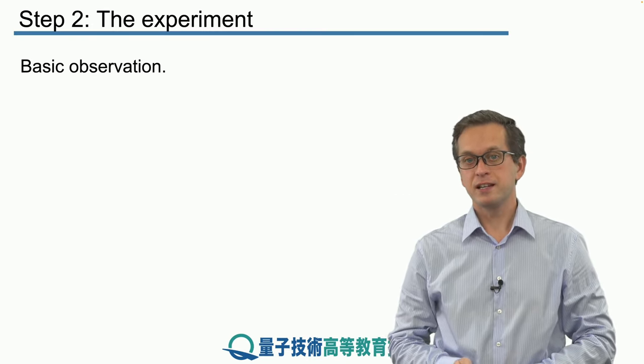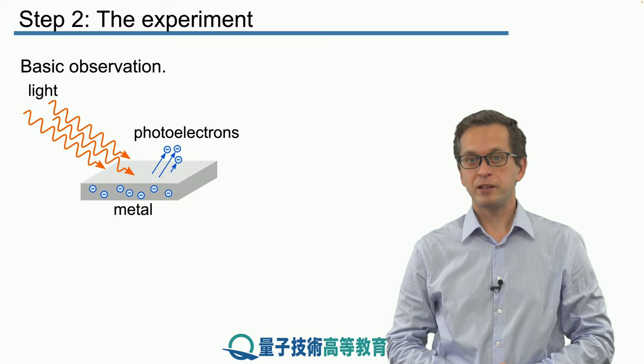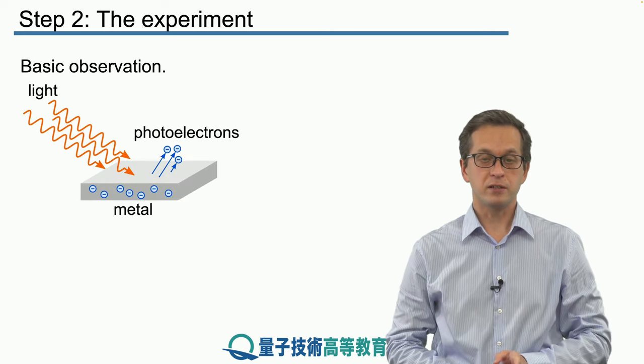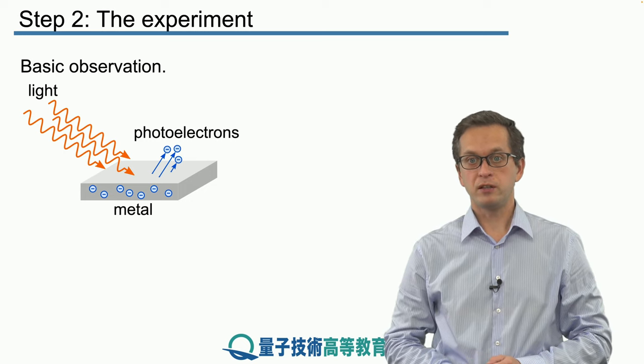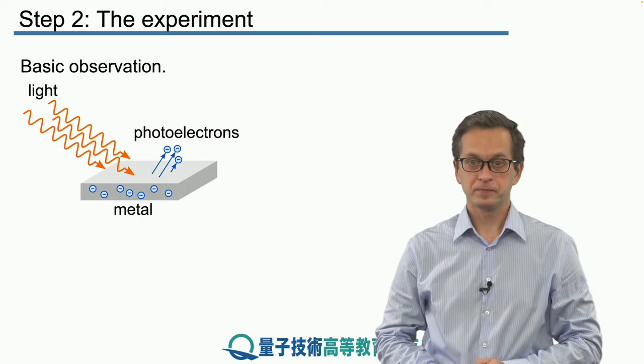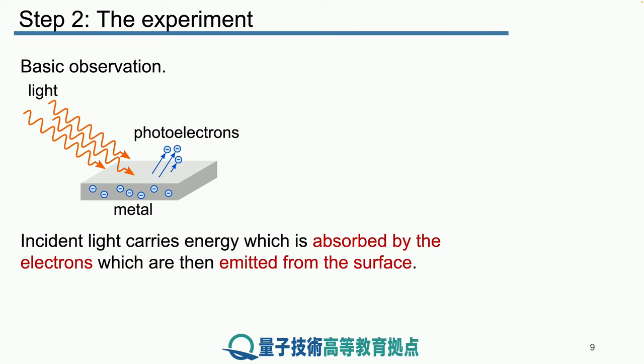So the basic observation is that if we have a sheet of metal and we shine a light of a certain frequency, we will observe that photoelectrons are ejected from this metal. The energy of the photoelectrons is dependent on the light and we will explore this relationship.